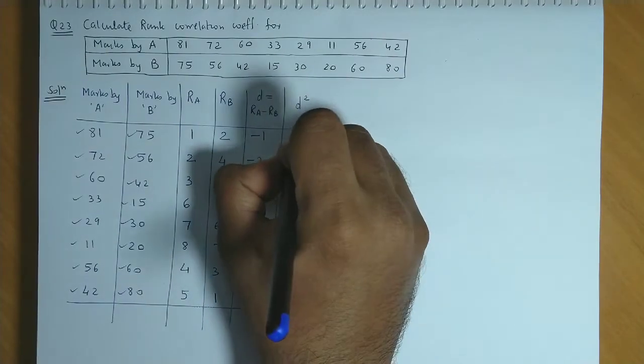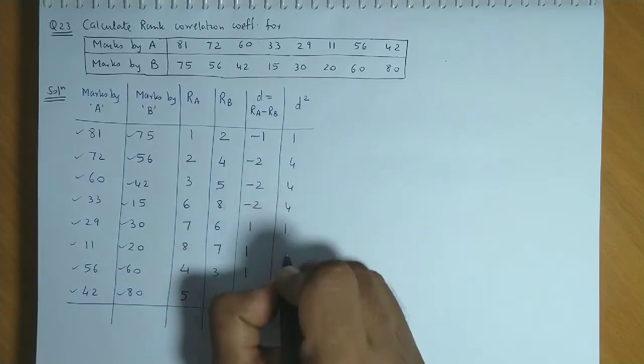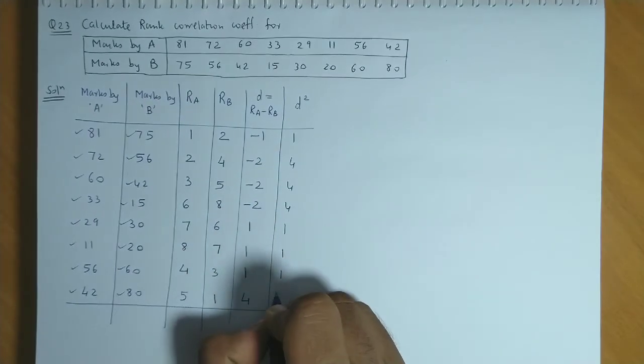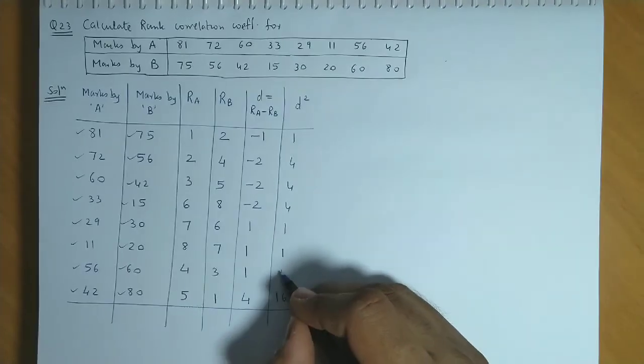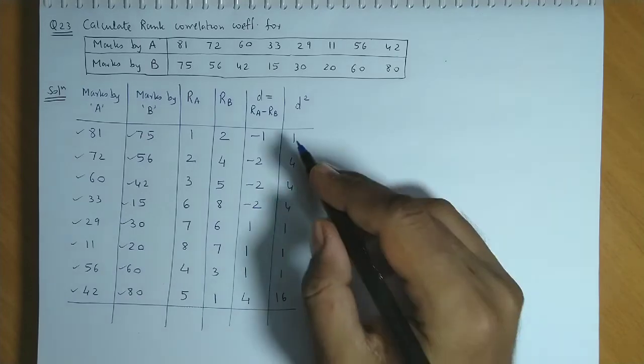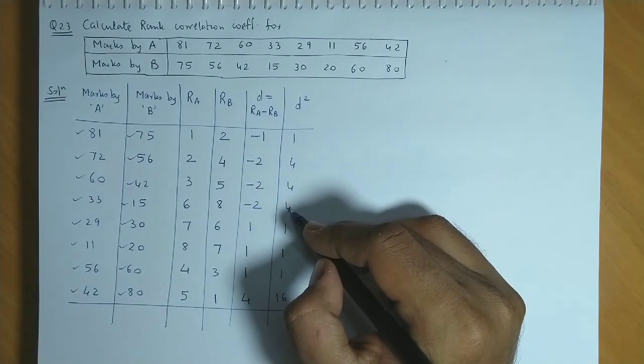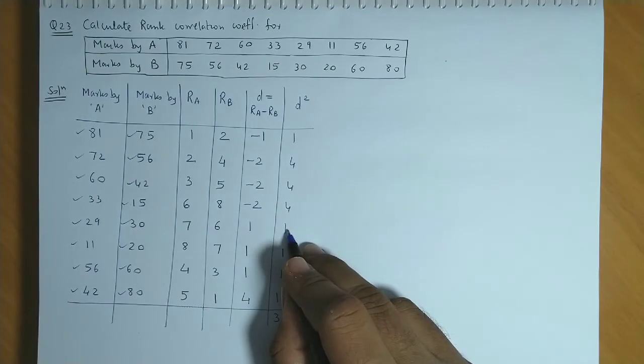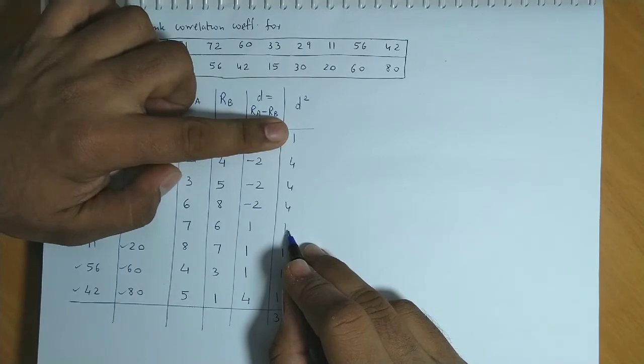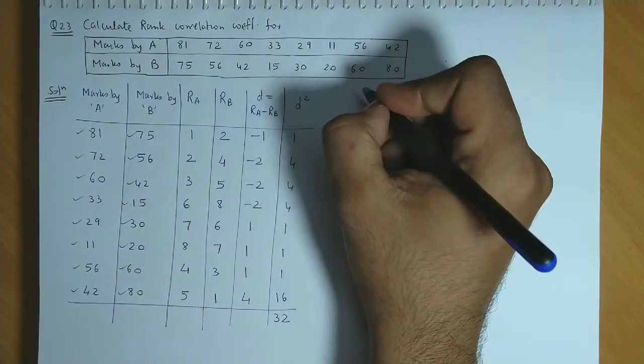Now D square, so this will be 1, 4, 4, 4, 1, 1, 1, and 16. Now let's total this. So we have 16, 17, 18, 19, 20, 20 and 12 is 32. Let us cross check: 16, 17, 18, 19 and 1 is 20, 20 and 12 is 32.